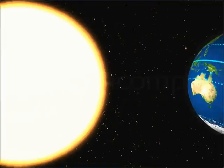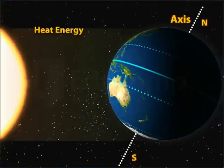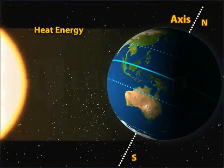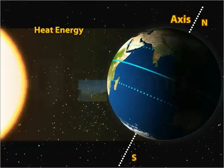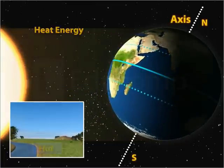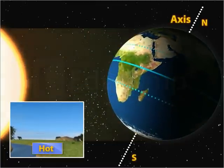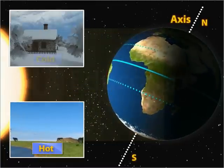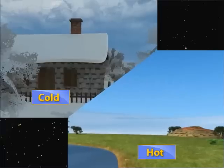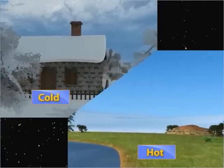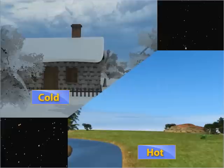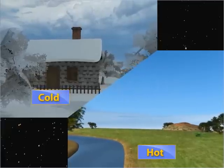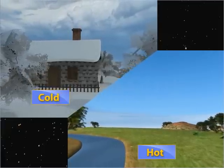The heat energy received is not uniformly distributed over the surface of the Earth. Some places are very hot and some other places are very cold. Let us first understand why there are differences in the distribution of temperature over the surface of the Earth.